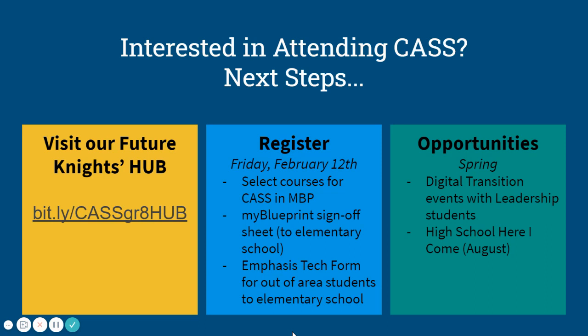Your next steps: check out the Hub — everything is there, organized by topic, with more details and pictures. Keep in mind the final deadline of Friday, February 12th, and follow your elementary school's deadline. Select your courses for CAS in My Blueprint, ensure the elementary school gets the consent form, and if you're an out-of-area student, provide the emphasis technology form. In the spring there will be further opportunities to help you transition to high school, and our leadership students will be helping with that.